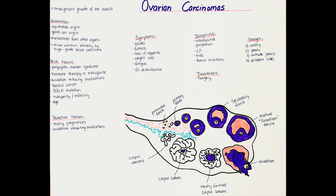Unfortunately, many women are diagnosed with ovarian carcinoma at a late stage, as it often does not cause any symptoms in the beginning of the disease. The average age of diagnosis is between 60 and 70 years. The most common type causing lethality is the high-grade serous carcinoma.